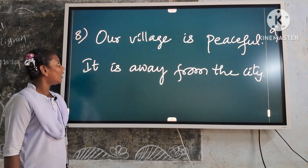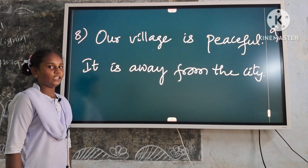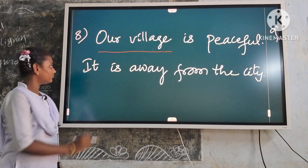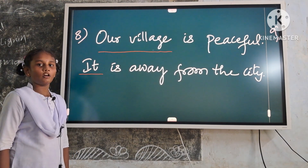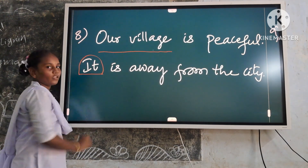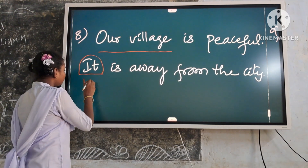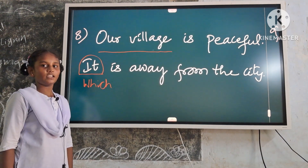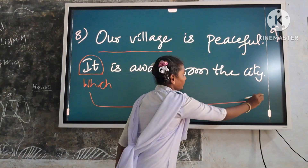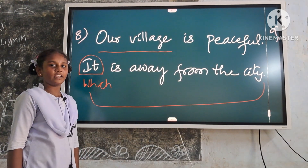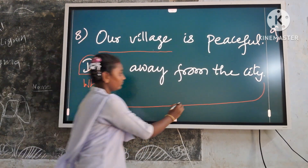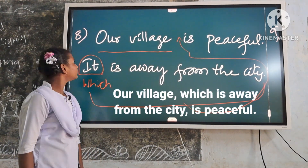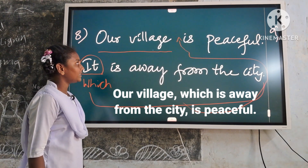Now eighth example: Our village is peaceful. It is away from the city. Here the noun phrase is 'our village.' Related pronoun: it. Round off the related pronoun in the second sentence. Replace it with which. Keep the entire second sentence beside the identified noun phrase of things. Now the answer is ready: Our village which is away from the city is peaceful.